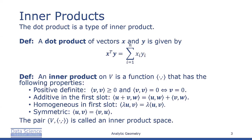It's homogeneous in the first slot, which means for any real number lambda, the inner product of lambda u and v is equal to lambda times the inner product of u and v.